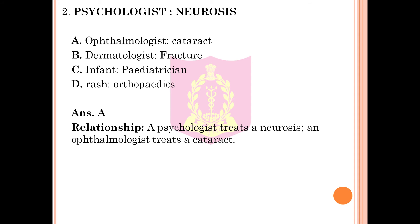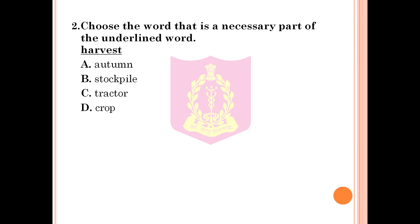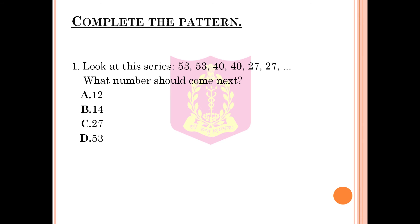The next topic under Logic and Reasoning is find the word that names a necessary part of the underlined word. Question 1: Choose the word that is a necessary part of LANGUAGE. Option A: tongue, B: slang, C: writing, D: words. The correct answer is Option D, words — a language cannot exist without words. Question 2: Choose the word that is a necessary part of HARVEST. Option A: autumn, B: stockpile, C: tractor, D: crop. The correct answer is Option D, crop — a harvest cannot exist without a crop.